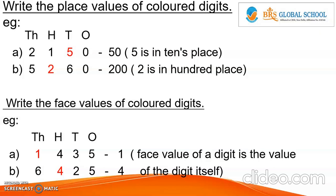Next, write the face value of the colored digit. For example, in 1435 the colored digit is 1, so the face value of 1 is 1. In the second example, 6425, the colored digit is 4. The face value of 4 is 4, because the face value of a digit is the value of the digit itself.